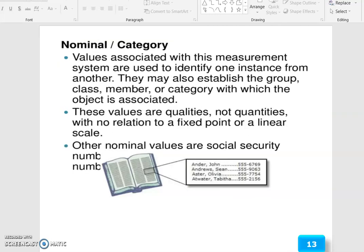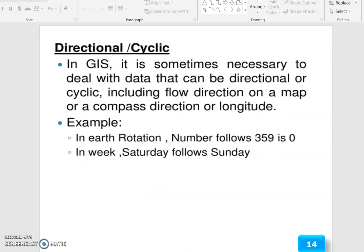The nominal or category based. Values associated with this measurement system are used to identify one instance from another. They may also establish the group, class, member, or category with which the object is associated. These values are qualities, not quantities, with no relation to a fixed point or a linear scale. Other nominal values are social security numbers. The number is called the category based.